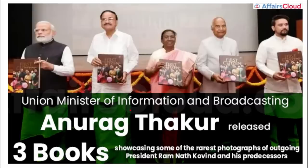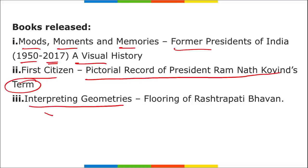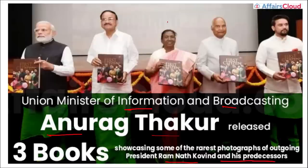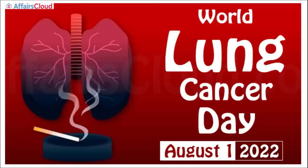Union Minister of Information and Broadcasting Anurag Thakur released three books showcasing rare photographs of outgoing President Ramnath Kovind and his predecessors. These books are: 'Moods, Moments and Memories: Former Presidents of India (1950–2007) — Our Visual History', 'First Citizen: Pictorial Records of President Ramnath Kovind's Term', and 'Interpreting Geometrics: Flooring of Rashtrapati Bhavan'. Also remember: Draupadi Murmu is the 15th President of India, the first tribal president, and the second woman president.